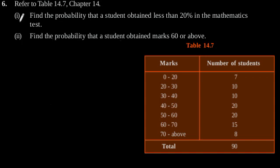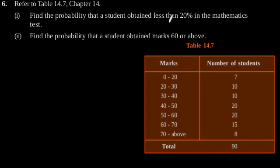Exercise 15.1, Question number 6. Refer to Table 14.7 of Chapter 14. This is our required Table 14.7. Find the probability that a student obtained less than 20% in the mathematics test.